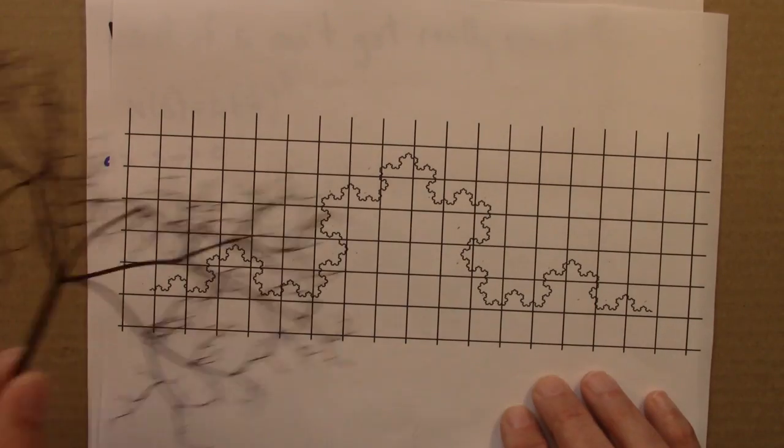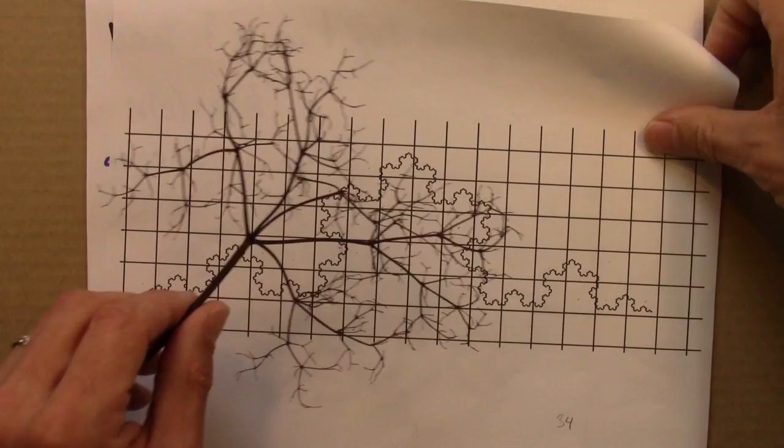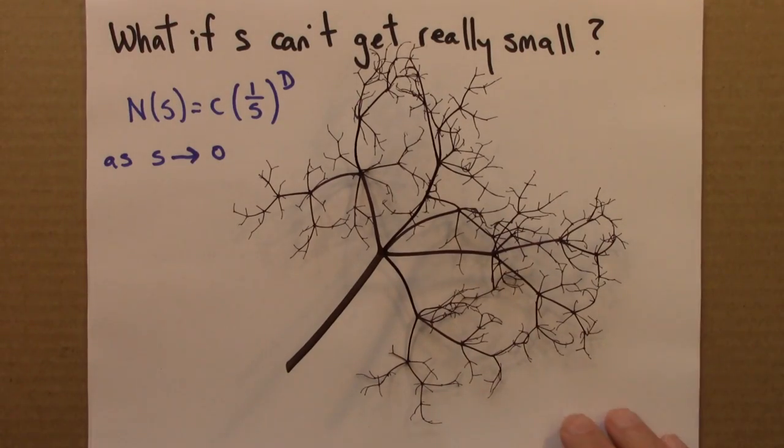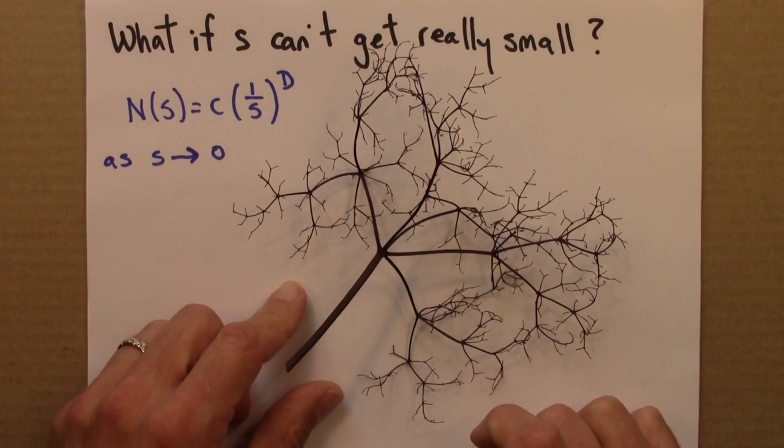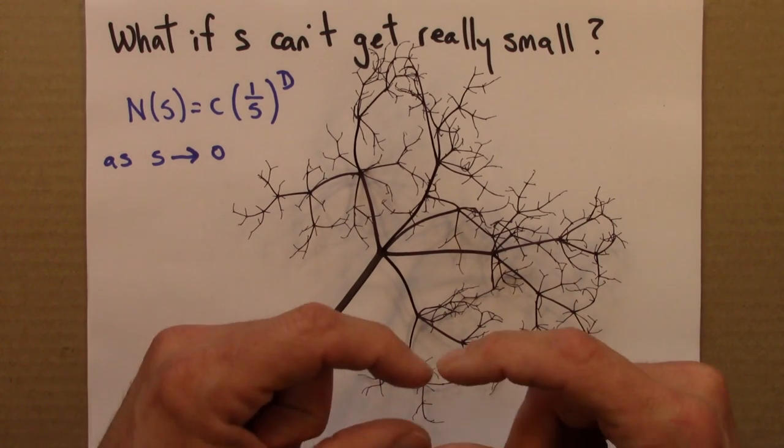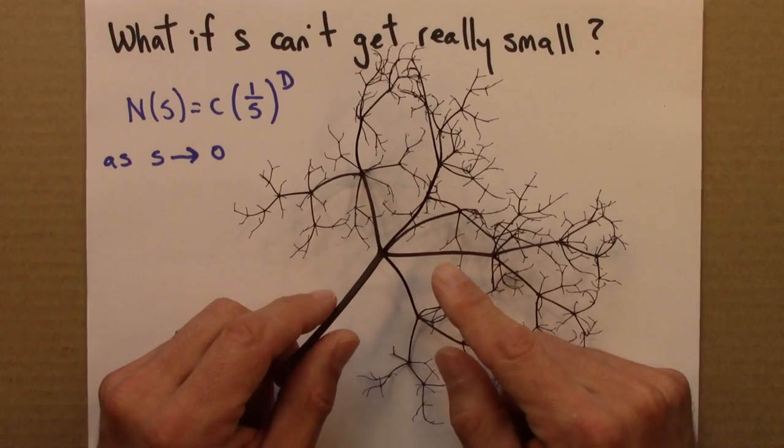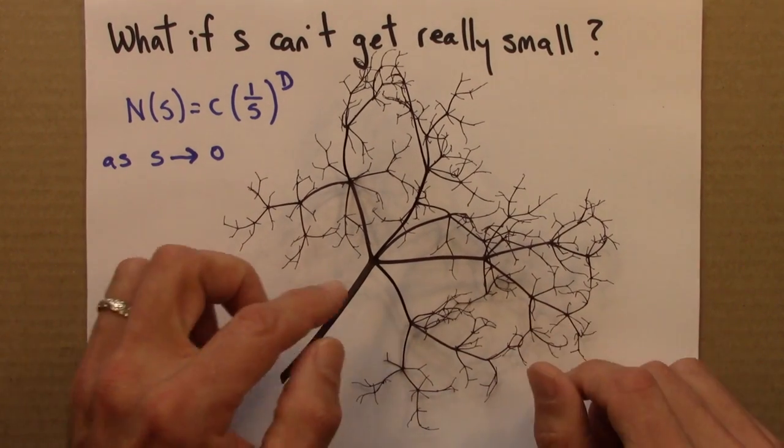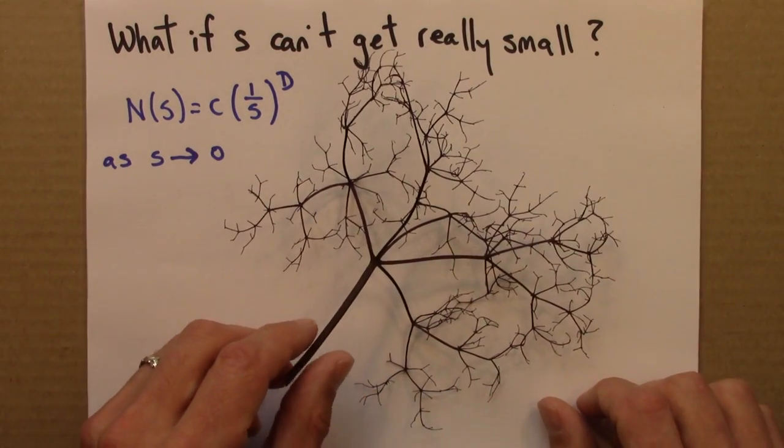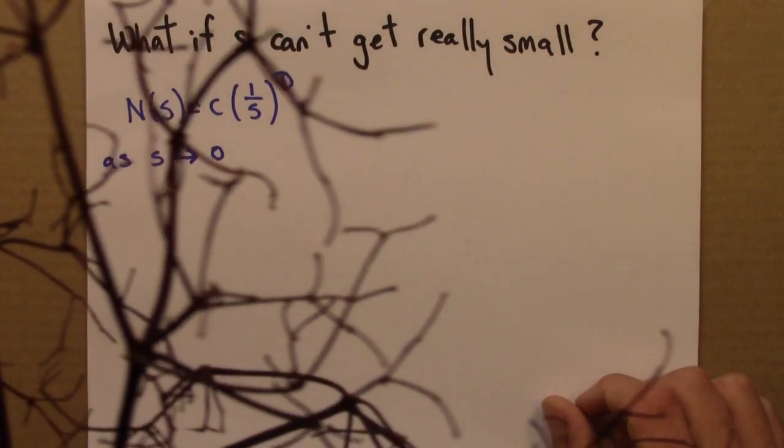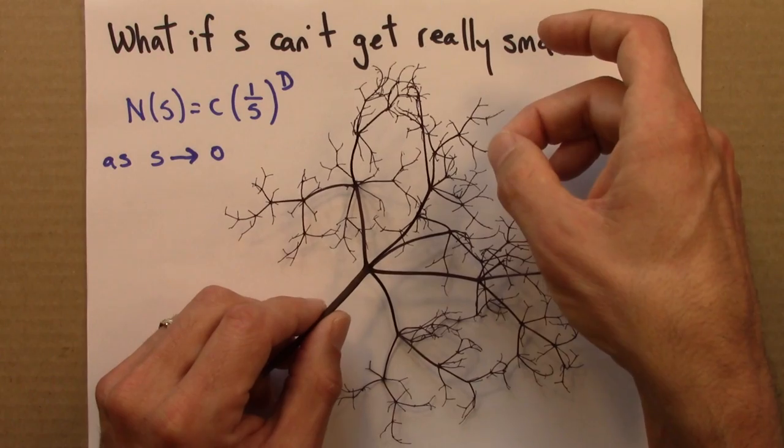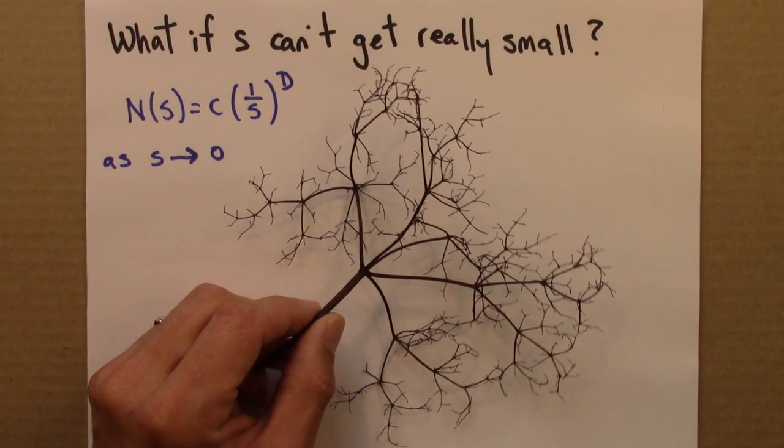And certainly, if we had a fractal like this from my elderberry bush, we can't zoom in here forever and use smaller and smaller boxes. Because eventually the self-similarity stops. I can zoom in a few times, but eventually what I'm left with is just going to look like a single branch. The self-similarity doesn't go on forever.